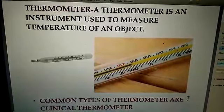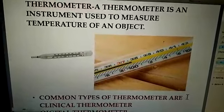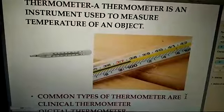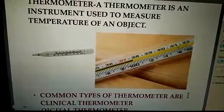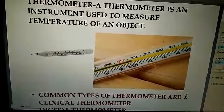Now, in order to measure temperature of an object, we need a thermometer. So a thermometer is an instrument used to measure temperature of an object, and on this thermometer, the scales are used. The common types of thermometer are clinical thermometer, digital thermometer, and laboratory thermometer.